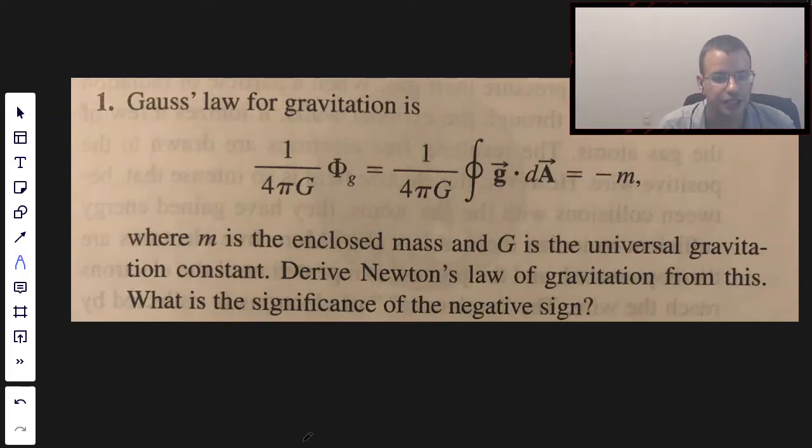Gauss's law for gravitation is this, where m is the enclosed mass and G is the universal gravitational constant. Derive Newton's law of gravitation from this. What is the significance of the negative sign?